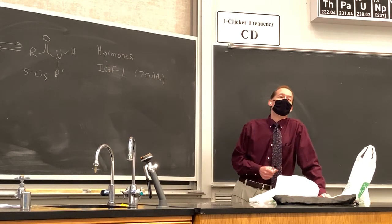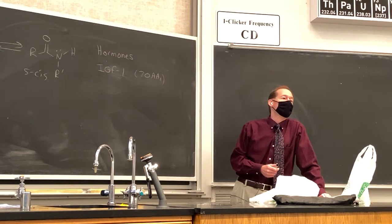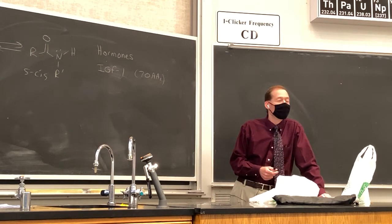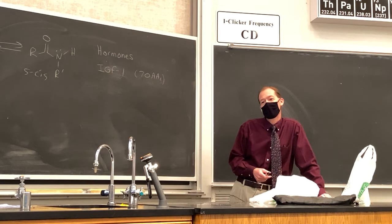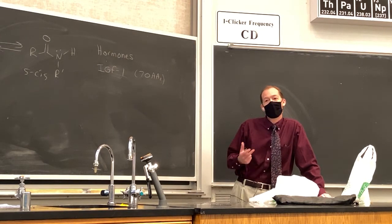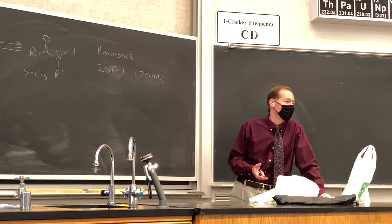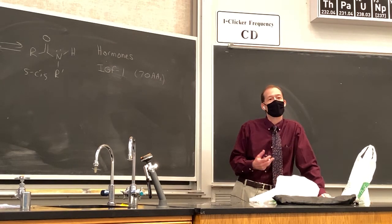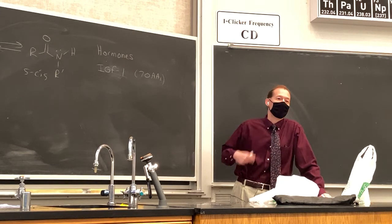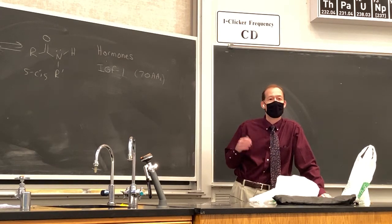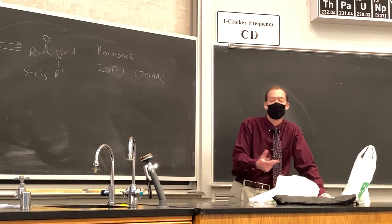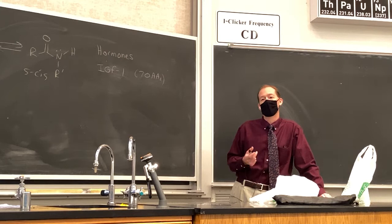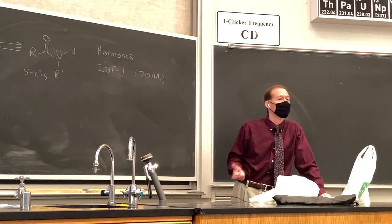There's another problem. What happens to insulin? Diabetics take insulin — how do they take it? They inject it, because it gets degraded in the stomach. We have enzymes in our stomach that are designed to chop up proteins. When we eat protein, the enzymes — proteases — chop up the amide bonds in the protein into individual amino acids. So if you ingest insulin orally, it's going to get destroyed by these proteases.